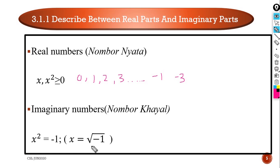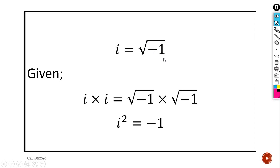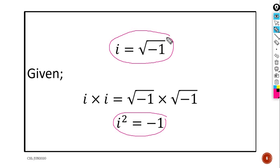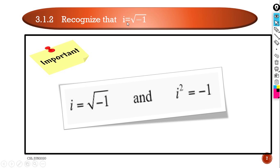Given i = √(−1), so i × i = √(−1) × √(−1). You get i × i = i², and i² = √(−1) × √(−1) = negative 1. So very importantly: i² = −1 and i = √(−1). You have to memorize both of these: i = √(−1) and i² = −1.